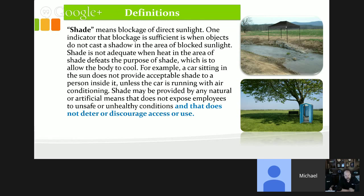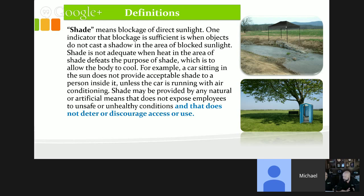They've added to the definition of shade that it does not deter or discourage access or use. Some job site shade areas are not somewhere employees want to go — for example, shade located in muddy water, near wet areas employees must cross, or right next to portable toilets. If the shade is way out of the way or discouraging, it will not count.